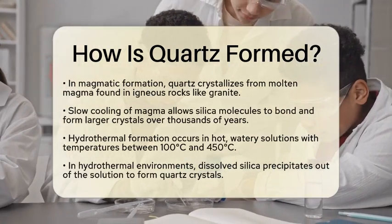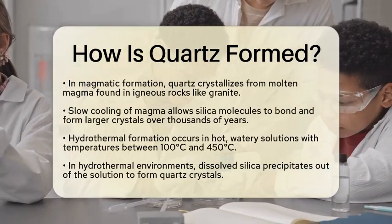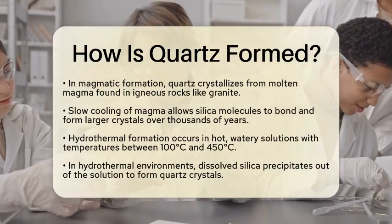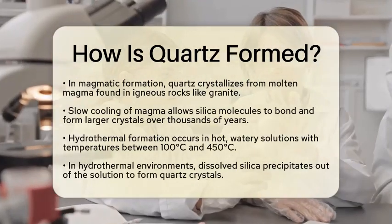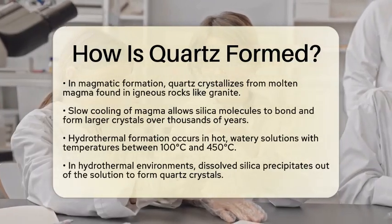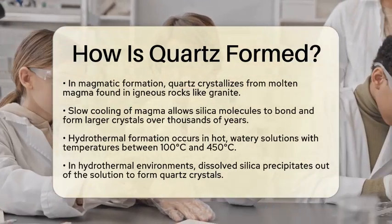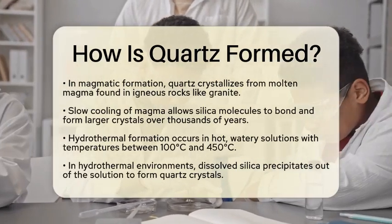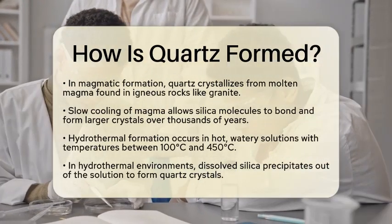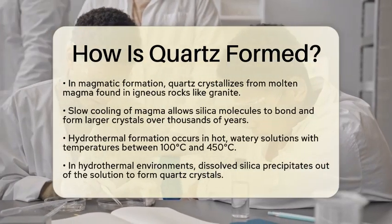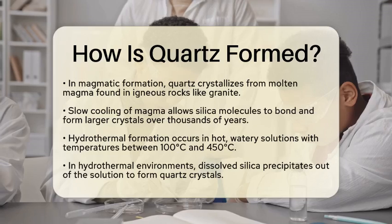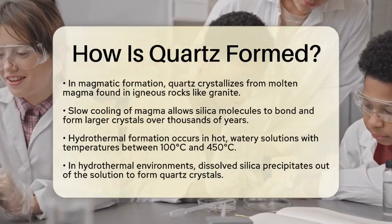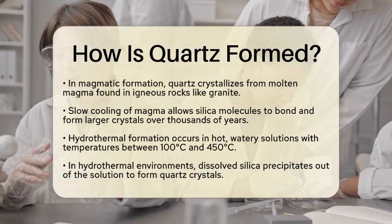On the other hand, hydrothermal formation occurs in hot, watery solutions. These environments have temperatures ranging from 100 degrees Celsius to 450 degrees Celsius. In these conditions, dissolved silica, often in the form of orthosilicic acid, precipitates out of the solution and forms quartz crystals. You can find these crystals growing in veins or cavities within rocks.